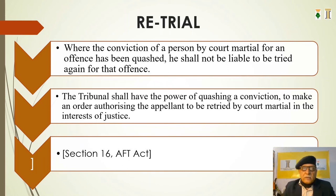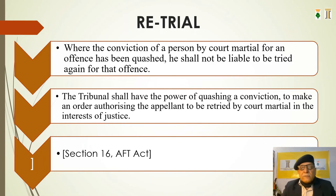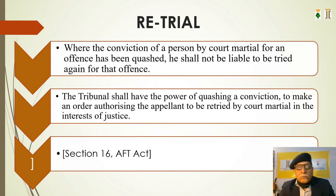Under section 16 of the Armed Forces Tribunal Act, there are provisions relating to retrial. Where the conviction of a person by court martial for an offense has been quashed, he shall not be liable to be tried again for that offense. However, the tribunal shall have the power, when quashing a conviction, to make an order authorizing the appellant to be retried by court martial in the interest of justice, and the order under section 16 would indicate the grounds for such retrial.